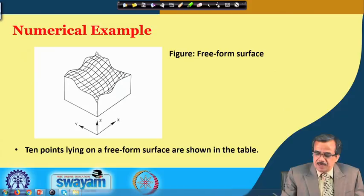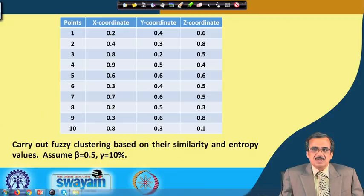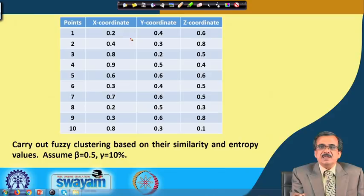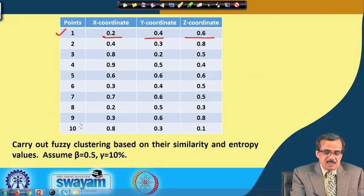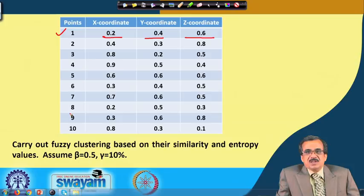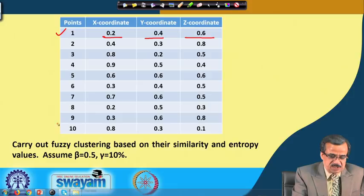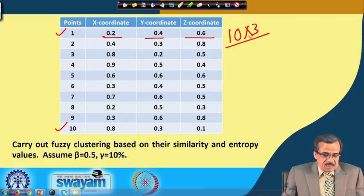Let us take the same example. The same set of 10 points lying on the free pump surface will be clustered using entropy-based clustering. These data points are 3D data points — for each point we have x dimension, y dimension, and z dimension. We have 10 number of data points. In matrix form, this data can be represented by a 10 cross 3 matrix with 10 rows and 3 columns.